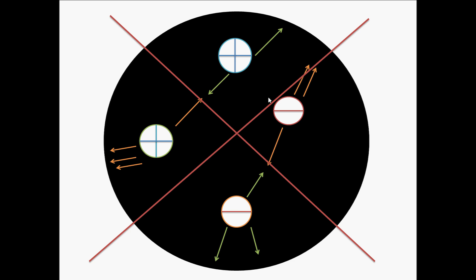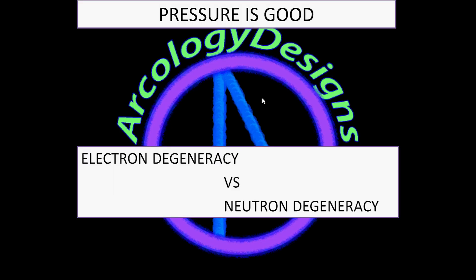But when that weight does become sufficient, electrons find a place to go — into protons, creating neutrons. Now we have a neutron star, and it stays apart because neutrons are also fermions, and they can't be in the same place at the same time. Quarks, the building blocks of protons and neutrons, have a spin of one-half — a half-integer.